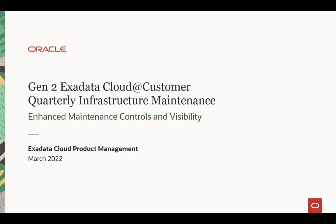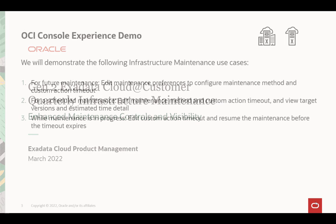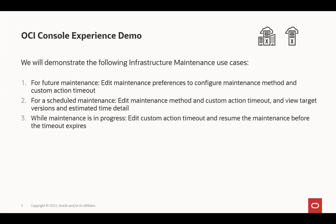Welcome to our demonstration of enhanced maintenance controls and visibility for the quarterly infrastructure maintenance on Gen2 Exadata Cloud at Customer. During this demonstration, we'll use the OCI console to show the following infrastructure maintenance use cases: editing maintenance preferences to be applied to future maintenance, including new controls for the maintenance method and enabling a custom action timeout; modifying the same controls for an already scheduled maintenance; and controls and visibility available while a maintenance is in progress.